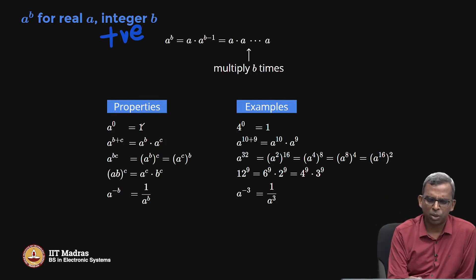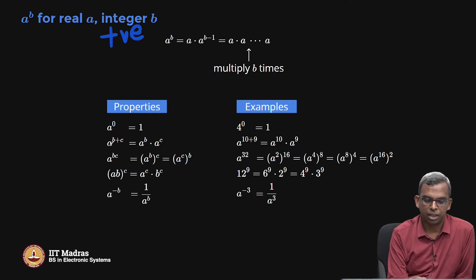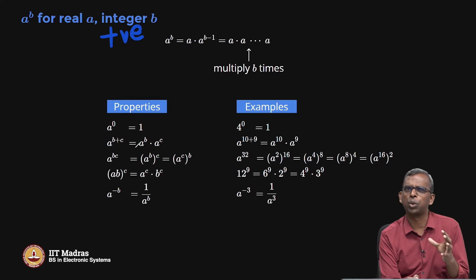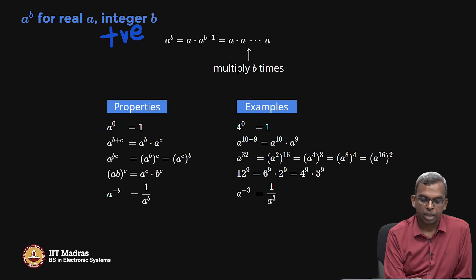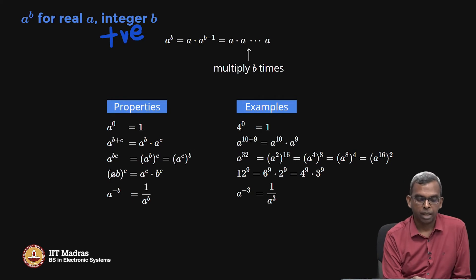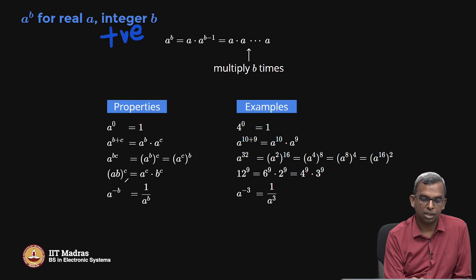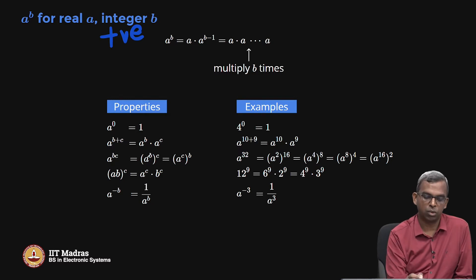The properties here are quite nice. a^0 equals 1, and a^(b+c) becomes the product a^b times a^c. a^(bc) is a^b raised to the power c, or equivalently a^c raised to the power b. Also, (ab)^c equals a^c times b^c. And a^(−b) equals 1/(a^b), which is what lets us handle negative integers. These are very basic properties you should have seen earlier.